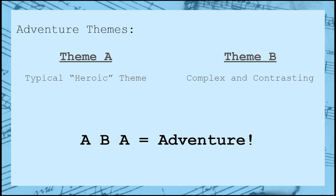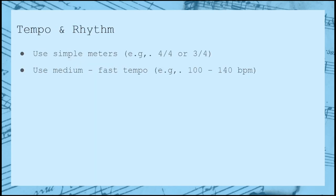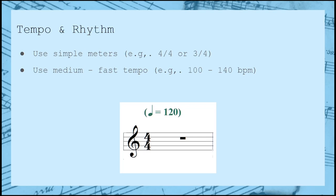Fortunately for us, both themes tend to share similar guidelines when it comes to tempo and rhythm. You'll want to stick with simple meters — things like 4/4 and 3/4 time — while using a medium to fast tempo, somewhere between 100 to 140 beats per minute. Our example was written in 4/4 time at a tempo of 120 beats per minute.